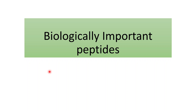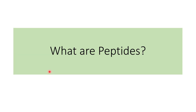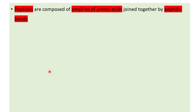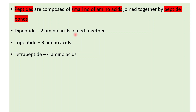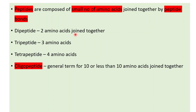Let us look at biologically important peptides. Peptides are basically composed of a small number of amino acids joined together by peptide bonds. For example, a dipeptide consists of two amino acids joined by a peptide bond, a tripeptide is three amino acids joined together, and a tetrapeptide is four amino acids joined together by a peptide bond.